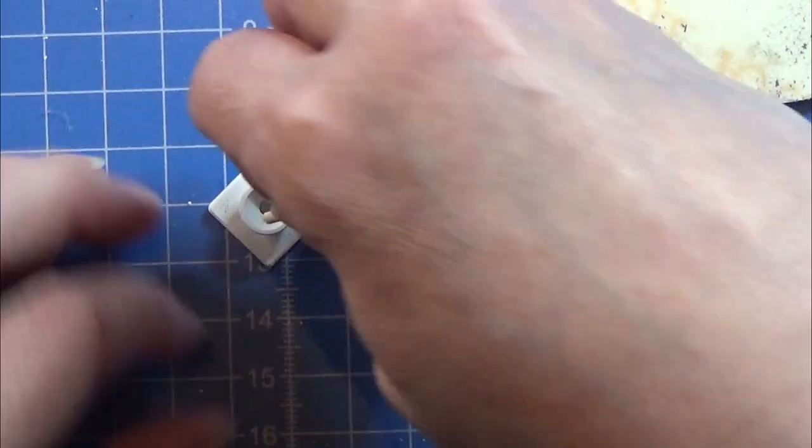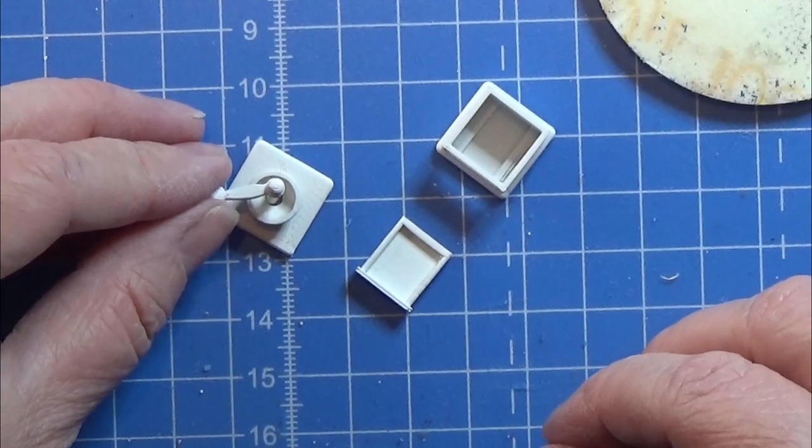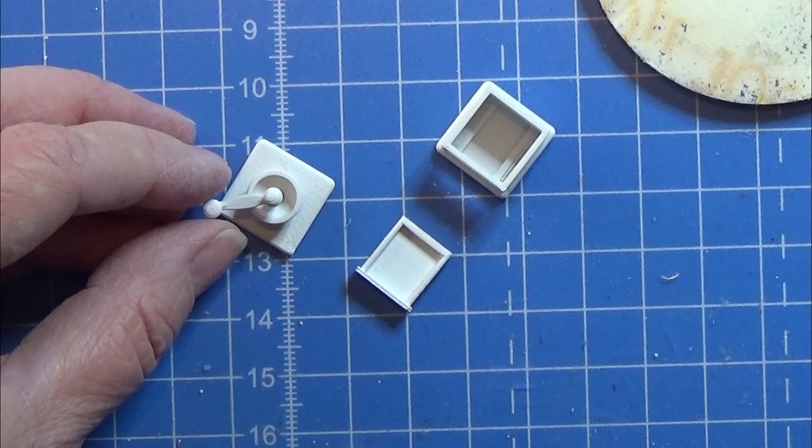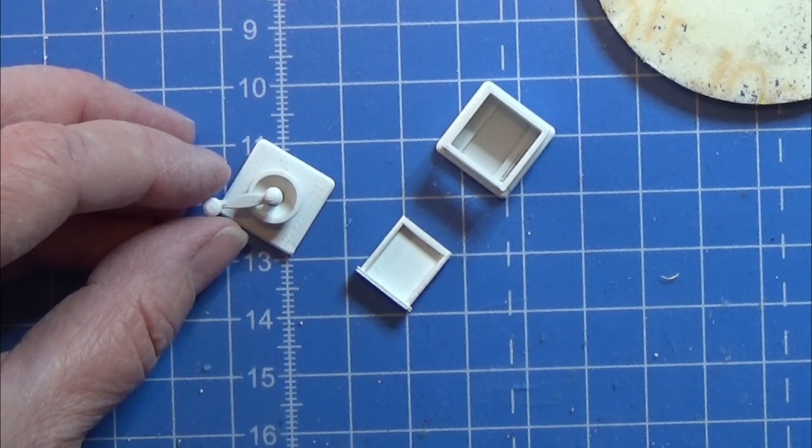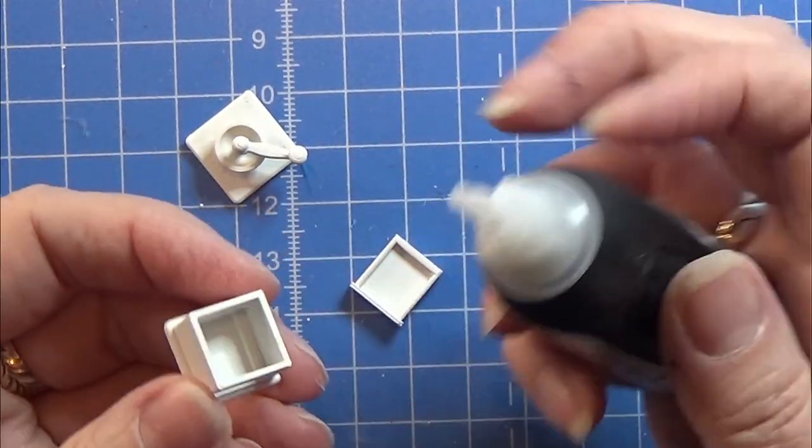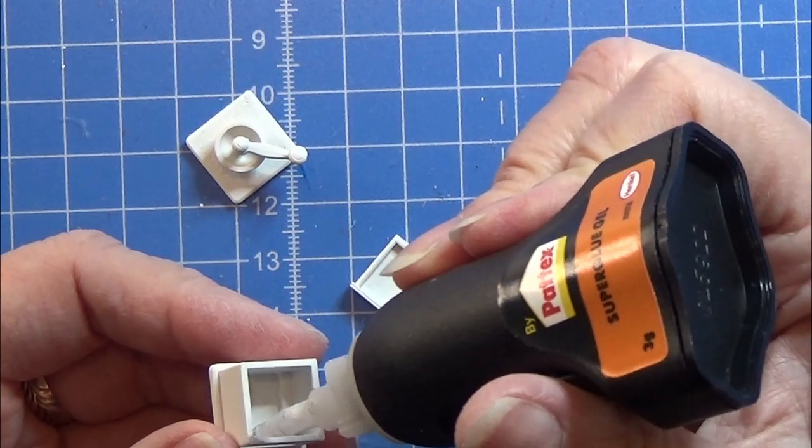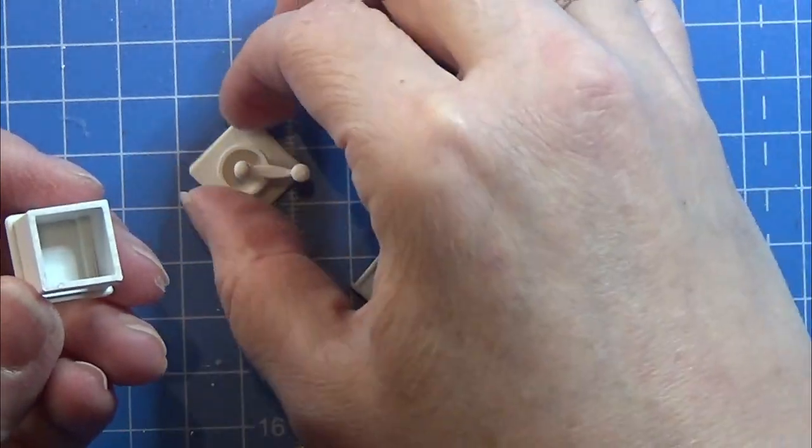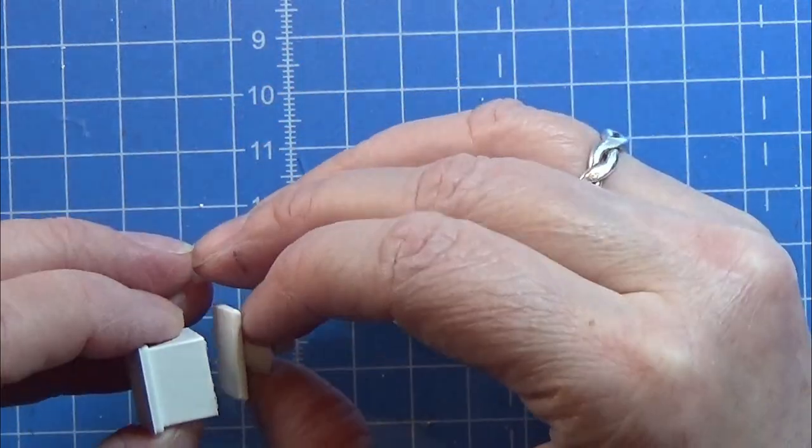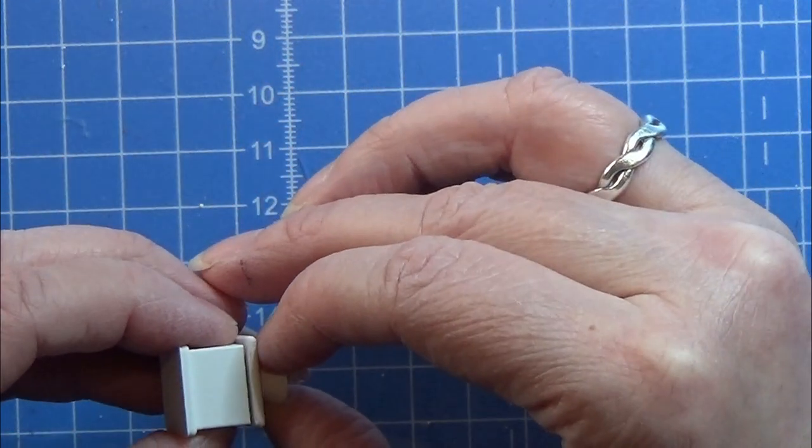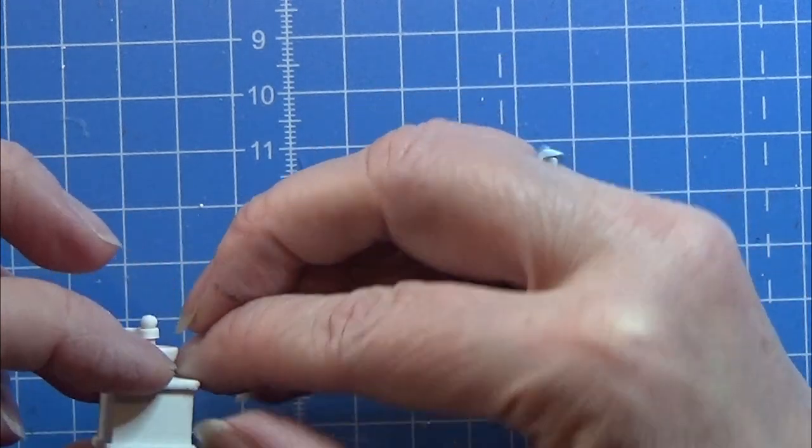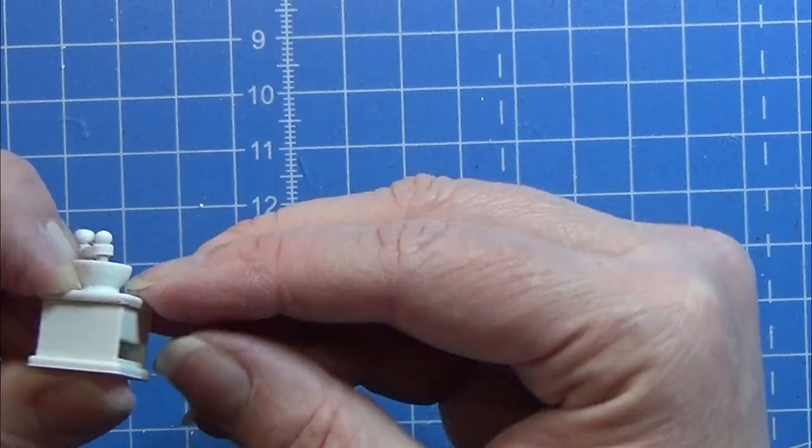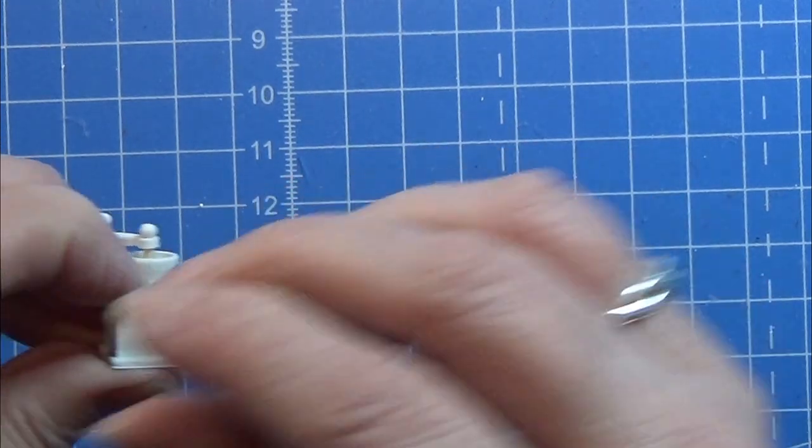I want to put the lid on this little part first before I paint it because that makes it so much easier. I'm just putting a tiny bit of glue on there and trying to place this together so that it is perfectly centered. Now I'm just leaving it to dry before I can paint it.